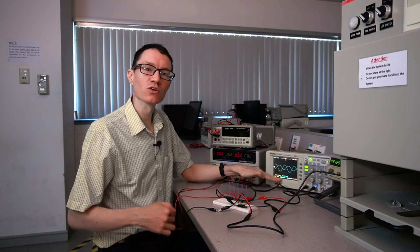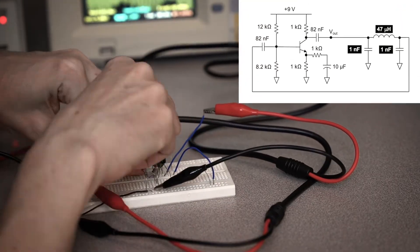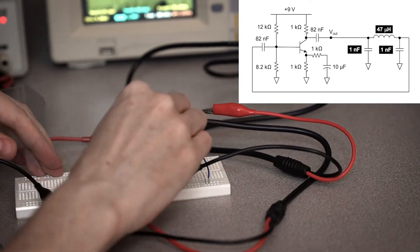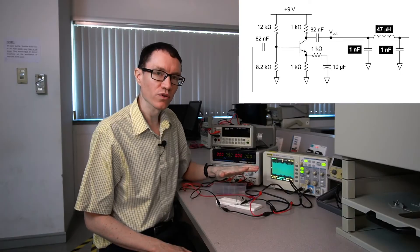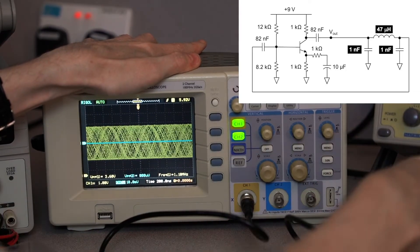That's probably good enough to make the Colpitts oscillator work, so I'm going to disconnect the function generator and put together the feedback network. We no longer need both channels of the oscilloscope. Let's just use channel 1 to monitor the output.